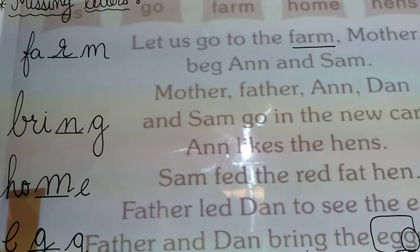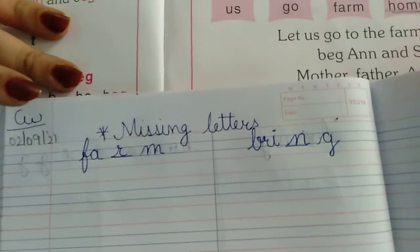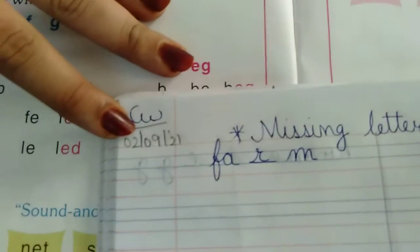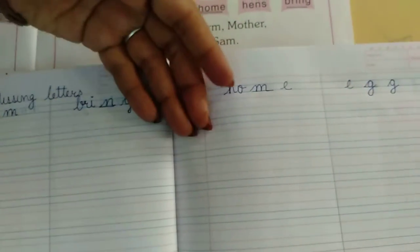Now this book, Missing Letters, we will write in our English book. Classwork, write down today's date, 2-9-21. Parents, is tarah se book page ready karna hai, Missing Letters ka. Ek page pe do, second page pe do.